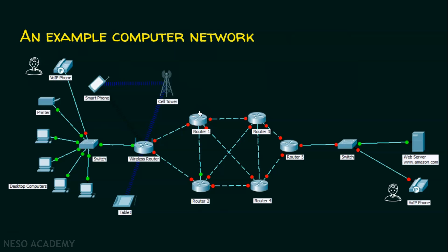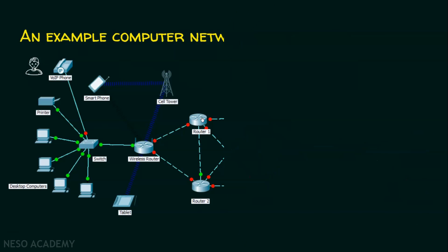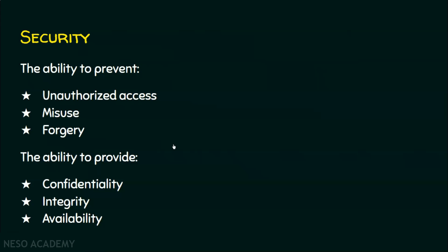The main aspects of quality of service are that it handles loss and also handles delay. Now we shall see the final characteristic of computer networks: security. It is the ability to prevent unauthorized access, misuse, or forgery. And not only prevention — the network should also provide confidentiality, integrity, and availability.